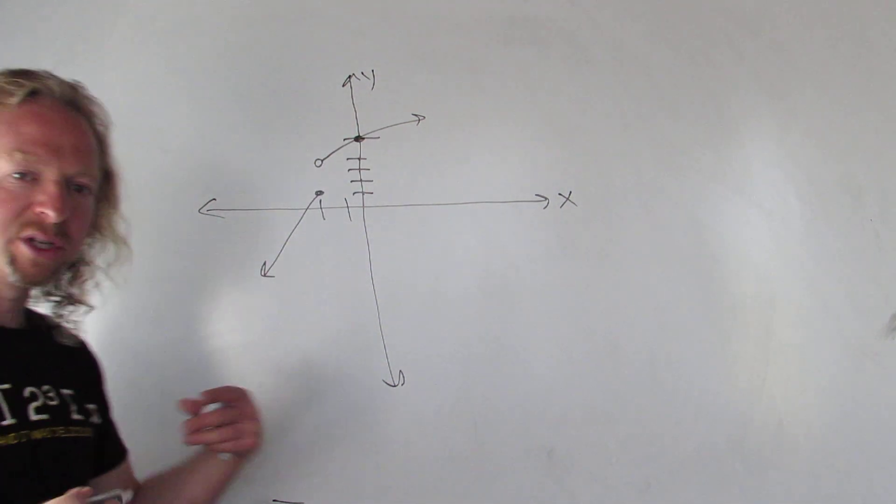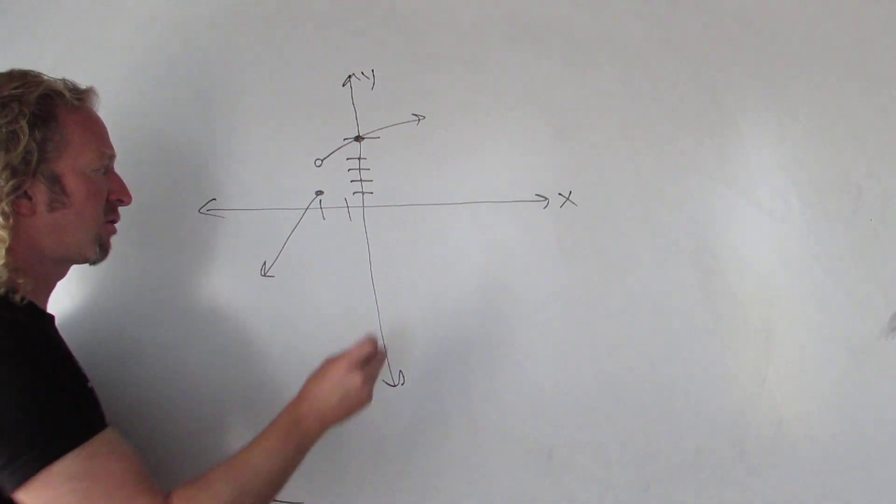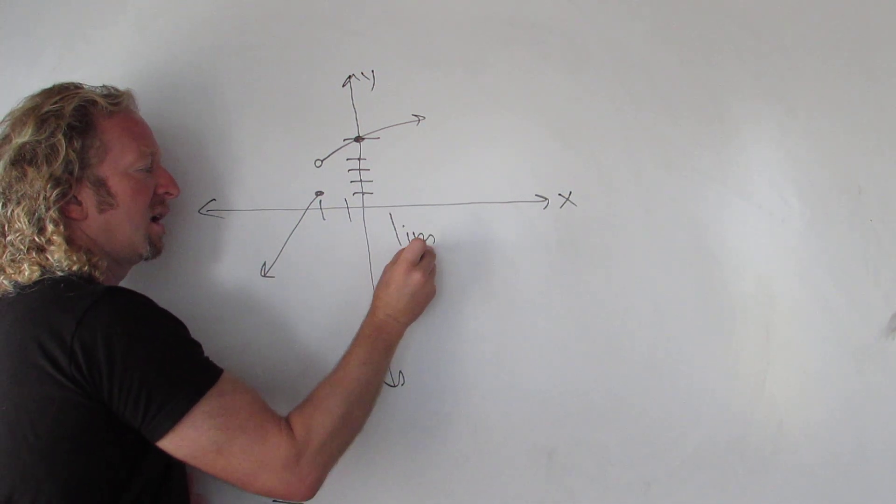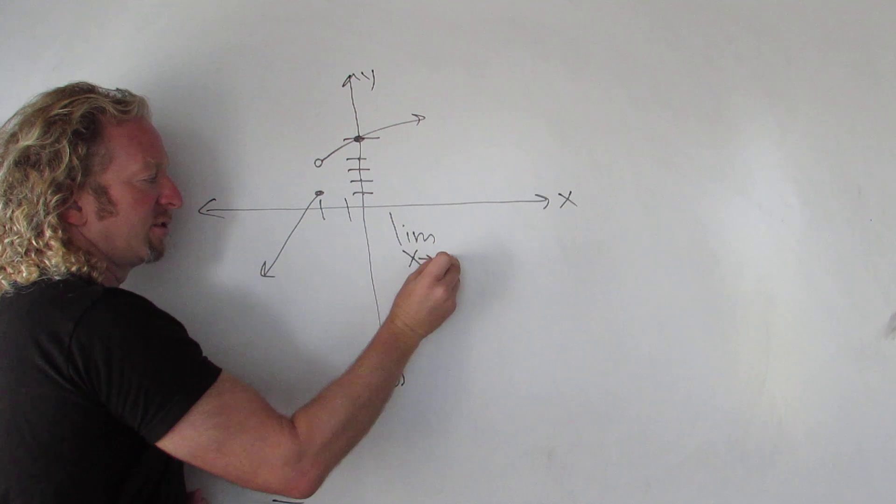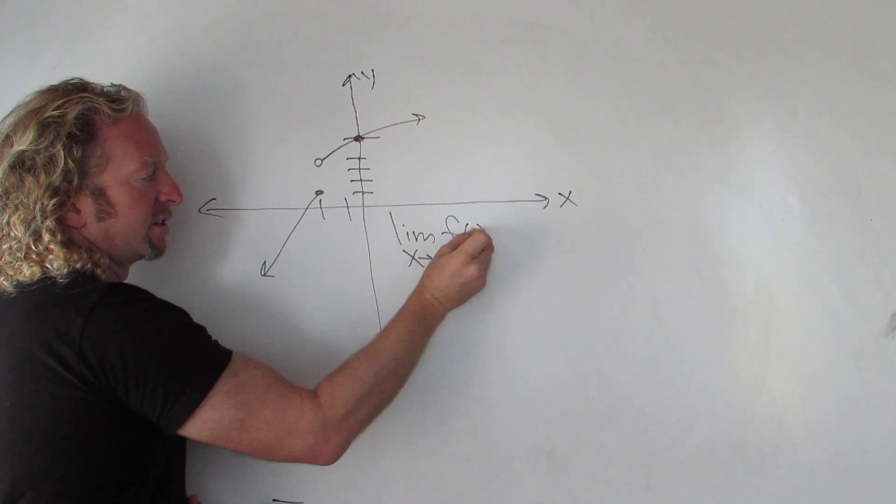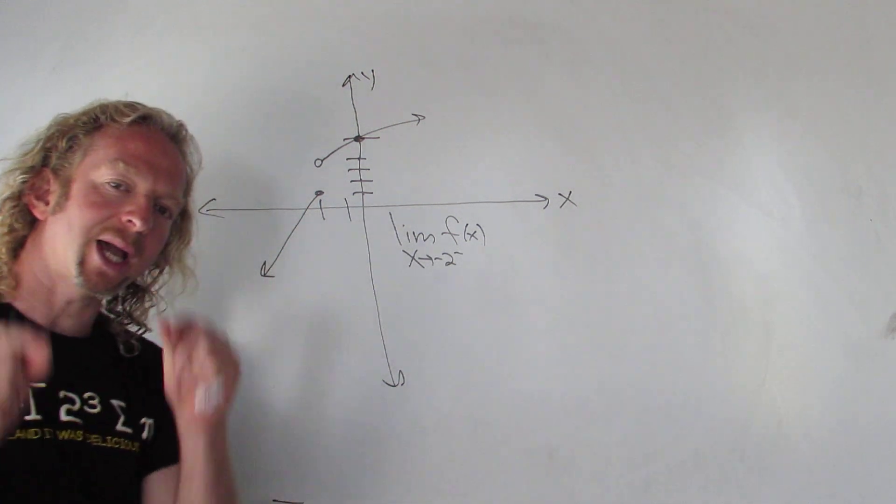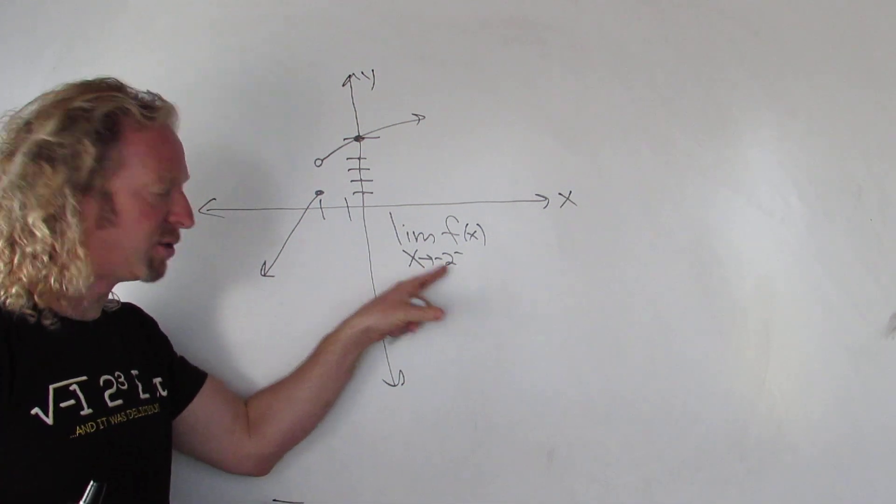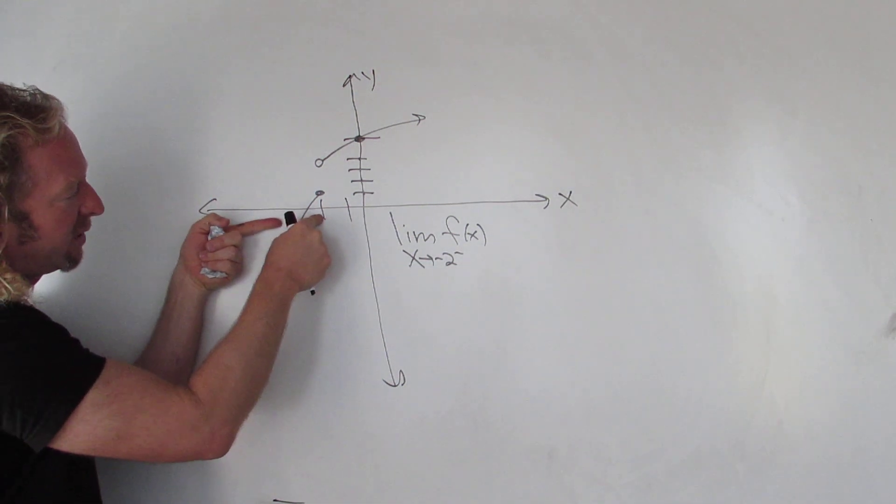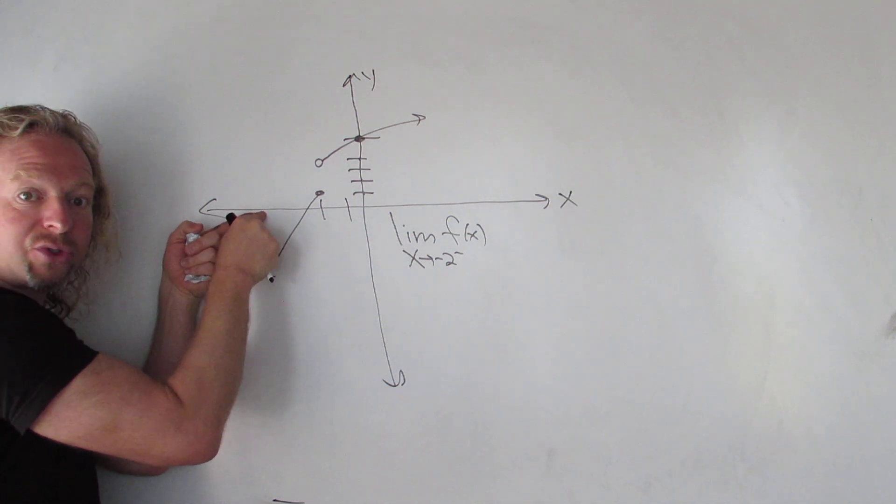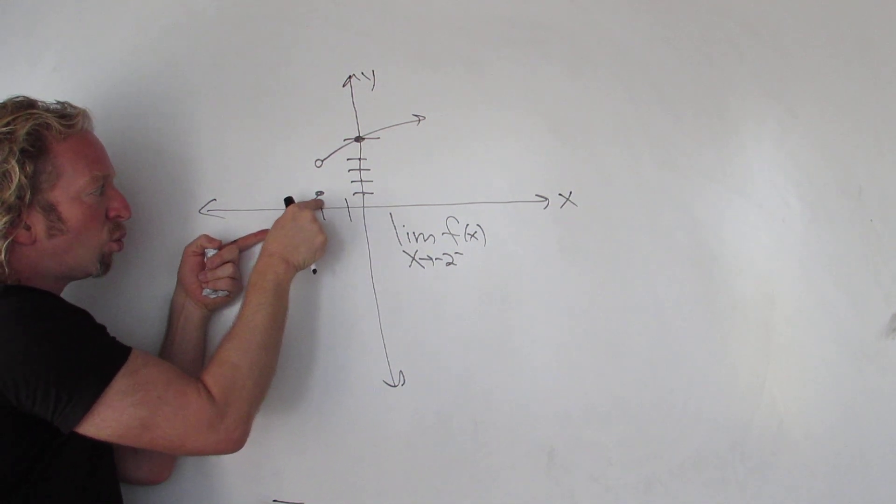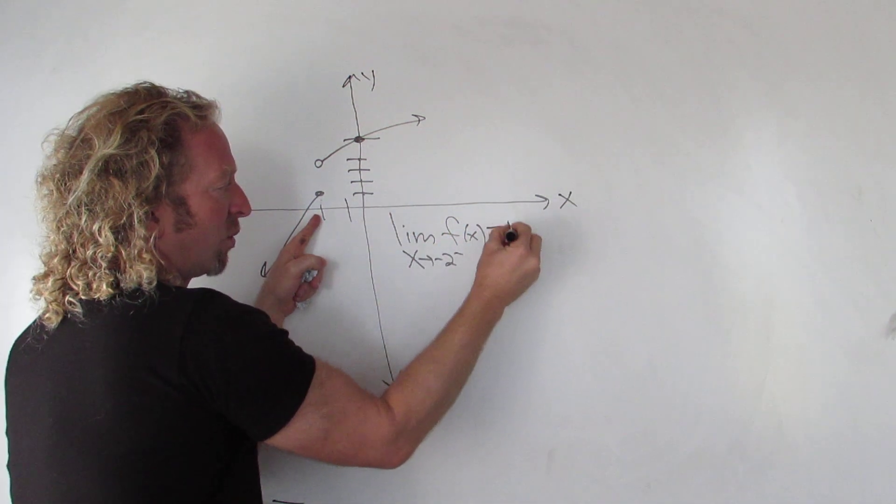Okay, now from this graph we can just compute some limits for practice. Let's start by finding the limit as x approaches negative 2 from the left of f of x. So the question is, what happens to the y-value when x gets really close to negative 2 from the left? So here's negative 2, so x is getting close to negative 2. So the y-value is getting really close to 1, so the answer is 1.